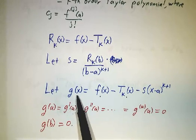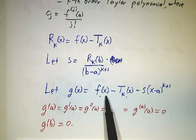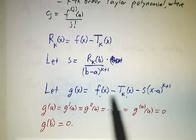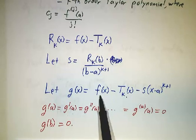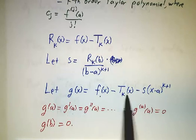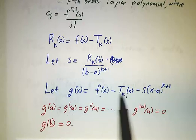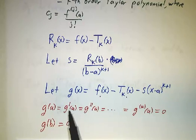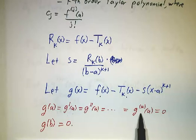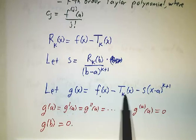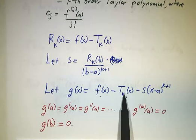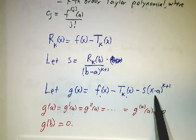But likewise, g of a is 0, because the value of the polynomial equals the value of the function at a, and the derivative matches, and the second derivative matches, and the third derivative matches. So in fact, g of a and all of its first k derivatives match at a. Sorry, f and t, all of their first k derivatives match at a, that's how we got the Taylor polynomial. And the first k derivatives of this function at a are all 0.